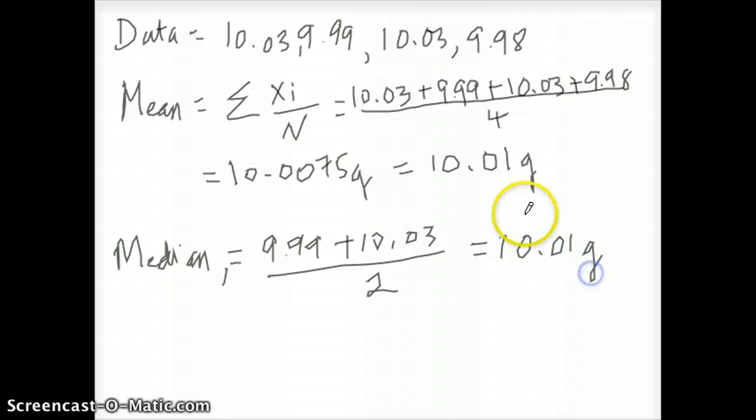You notice in this case the median and the mean have the same values. This is typical if you have a fairly good data set, meaning something that's distributed like a bell curve, like a normal distribution. So the mean and the median should be the same.